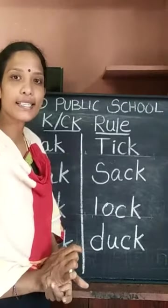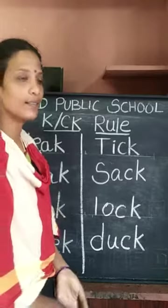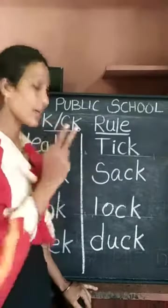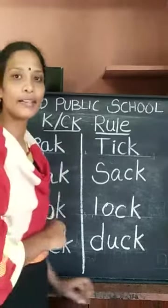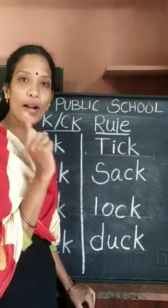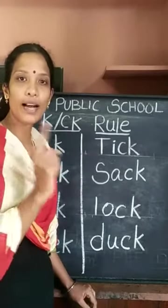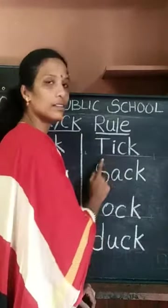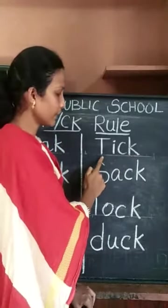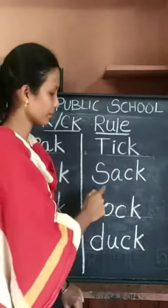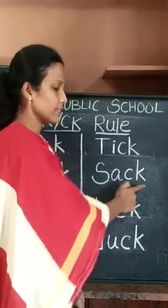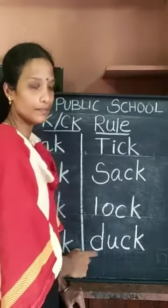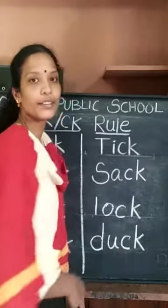Let me read these words. Listen carefully, then you try to read these words. T - I - CK. Tick. When two vowels come together, the first vowel says its name and the second vowel remains quiet. When only one vowel comes, it will say only its short sound. T - I - CK. Tick. T - I - CK. Tick. S - A - CK. Sack. L - O - CK. Lock. D - U - CK. Duck.